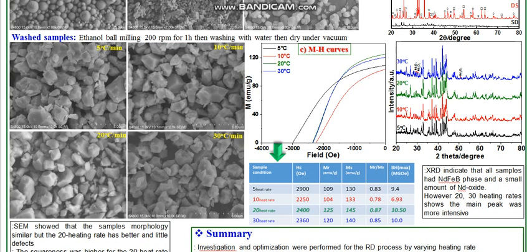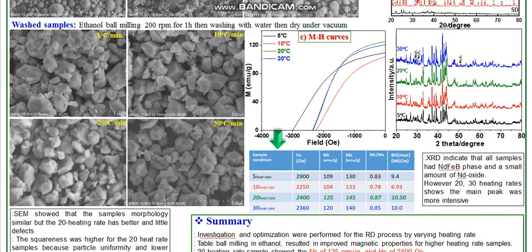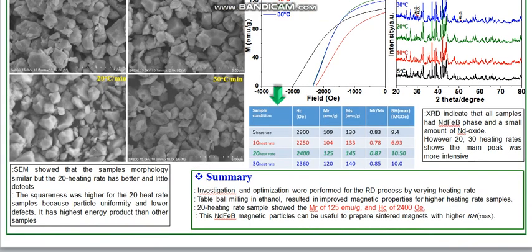The 20 degrees C per minute heating rate sample achieves a BHmax of 10.50 Megagauss-Oersteds and shows the best properties among all samples. The micrograph of this sample appears better than the remaining three, with minimal surface defects. Additionally, its XRD shows less intense Nd2O3 peaks, indicating higher phase purity, better crystallinity, good surface morphology, and good particle size distribution.